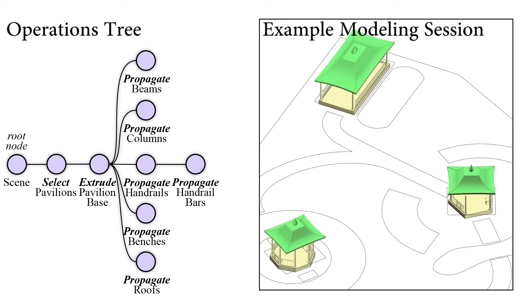Note that this propagation only created a single new roof. We still perform the propagation instead of placing the roof manually to record the roof placement in the operations tree. As we will see in a moment, this operation can then be applied to other scenes to create any number of new roofs.